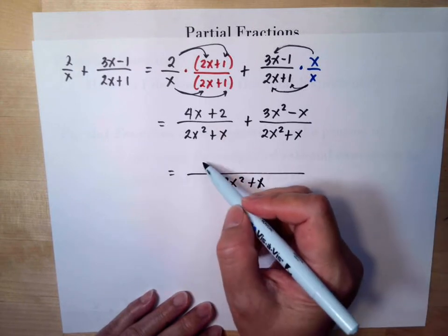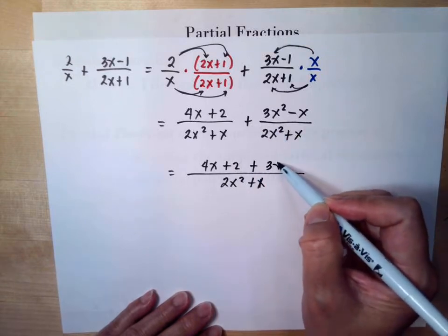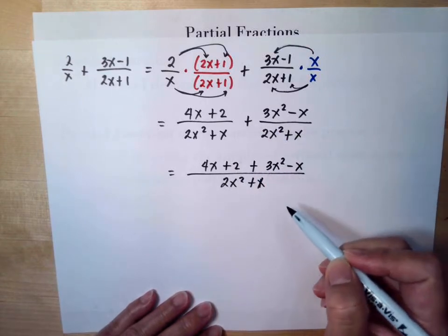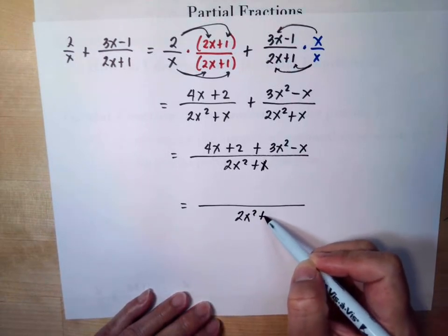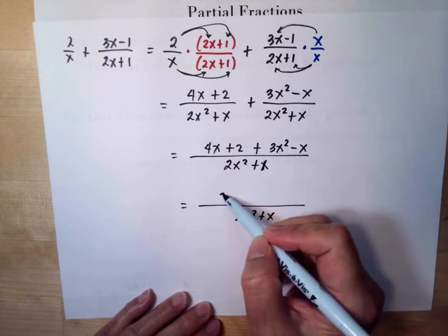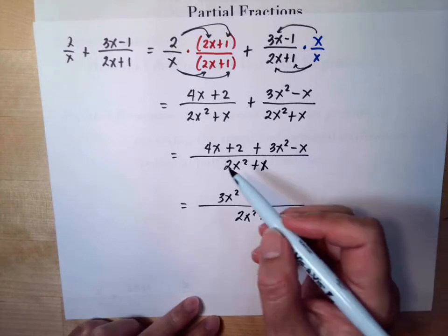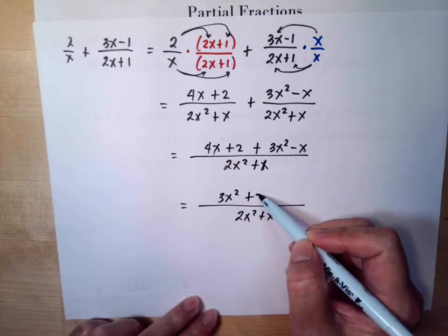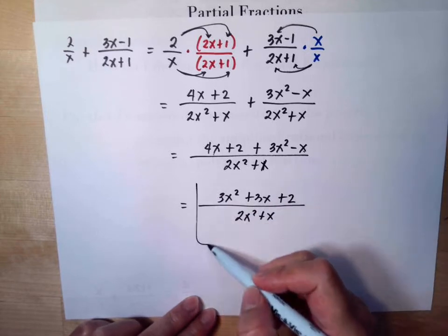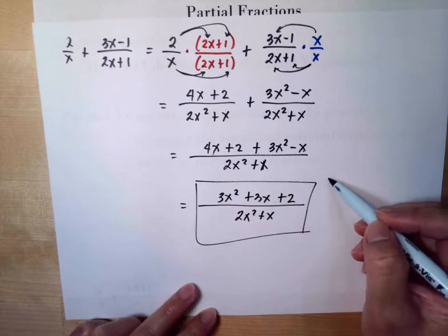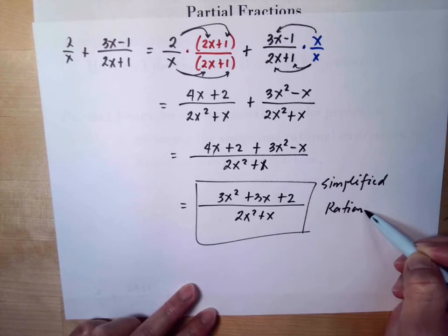Now we have the same denominator, so we can write them under one denominator. We have 4x plus 2 — positive, so no sign change — plus 3x squared minus x. Collecting like terms, arranged by highest exponent: 3x squared, then 4x minus x is 3x, then plus 2. This is the simplified rational expression.